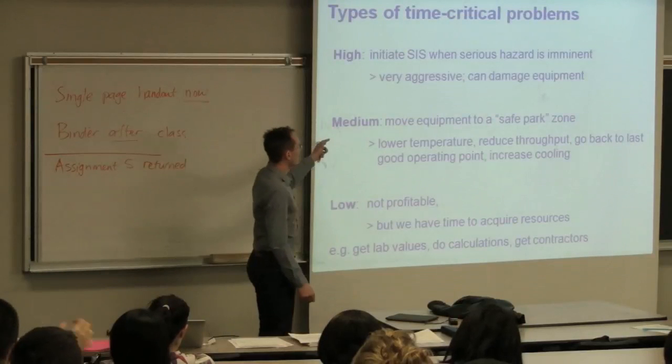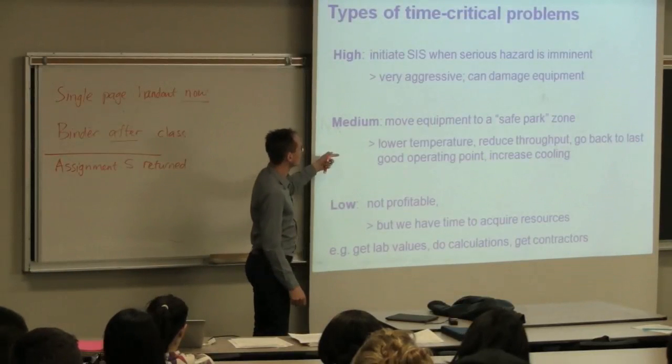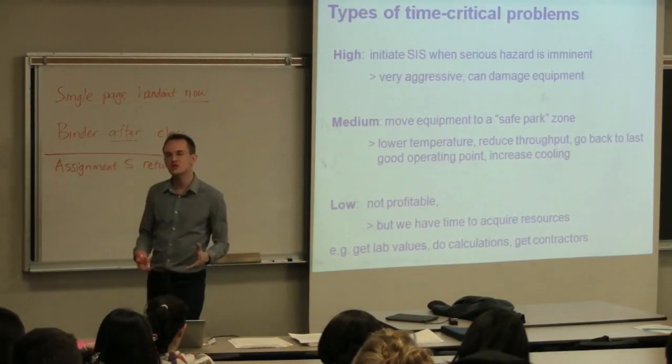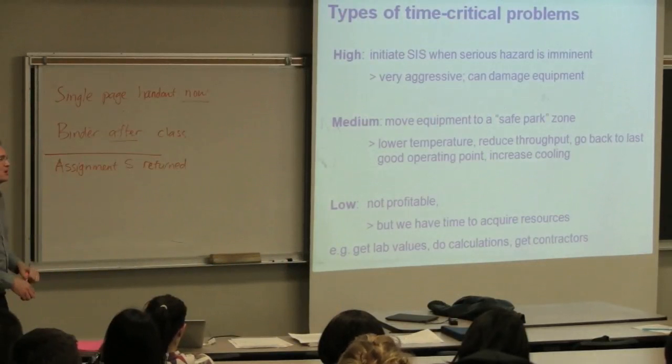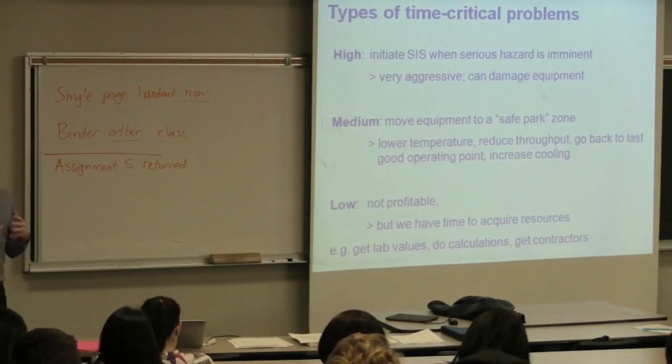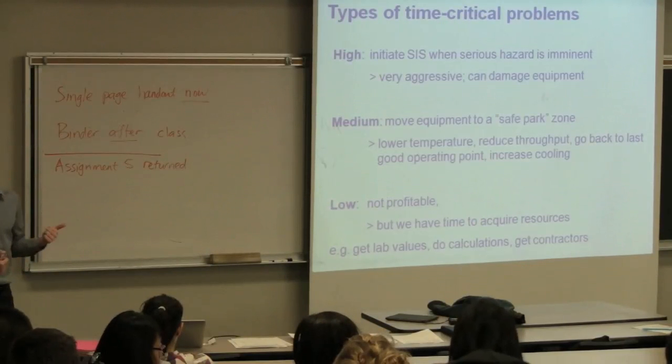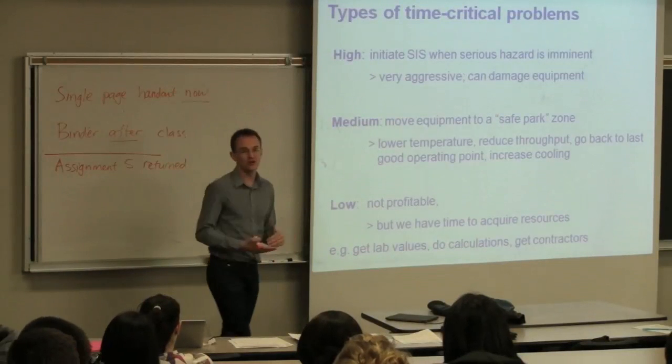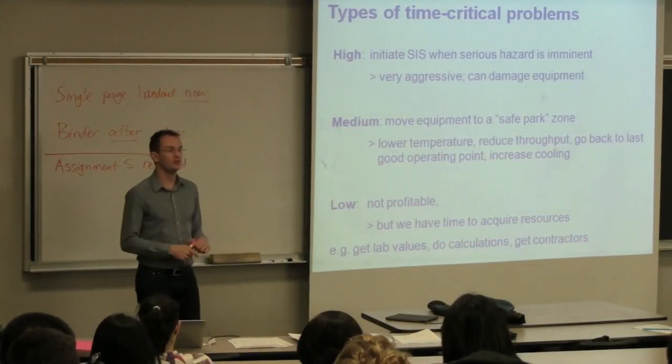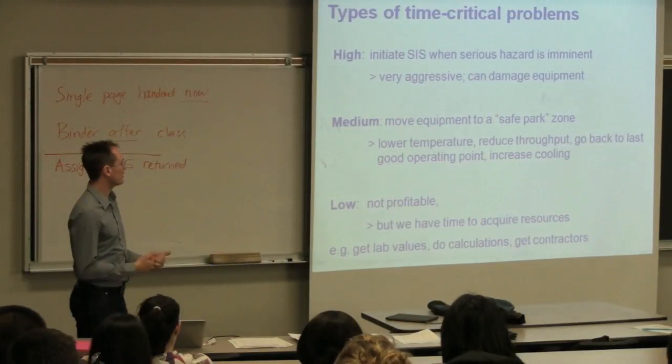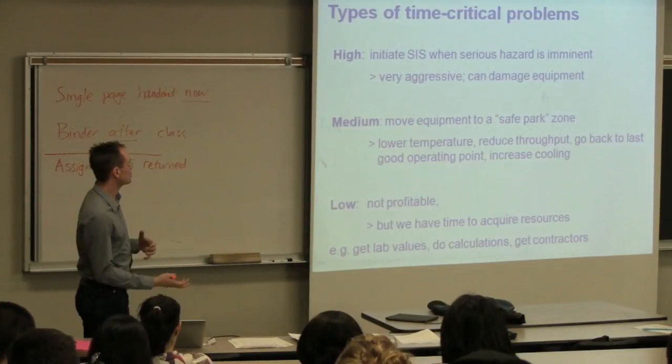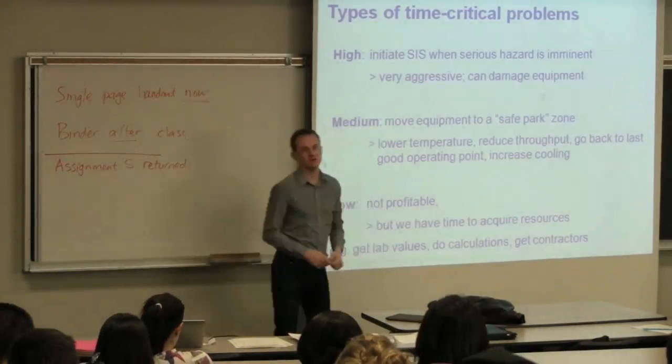A medium type of critical problem is intermediate. There's this new-ish idea of moving processes to what's called a safe park zone. From a hazard and operability study or from careful thinking, many engineers are starting to identify the safe park point for their processes. These are points which you can move the process to, which is definitely not economically optimal—we're not producing good product at a safe park zone, but it's essentially a point that you can have the operators trained to revert to.